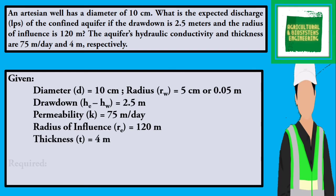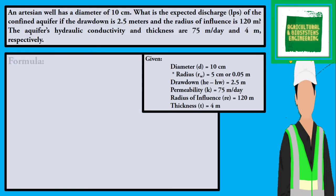The required in the problem is the discharge in liters per second. The formula that we are going to solve is Q equals 2 times pi, times k, times t, multiplied to the drawdown, all over ln of Re over Rw.